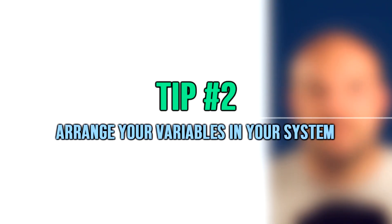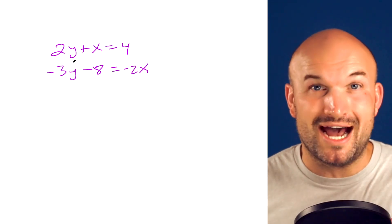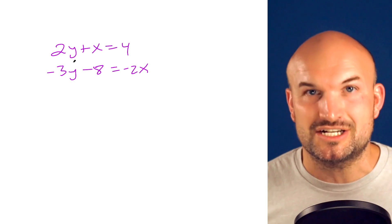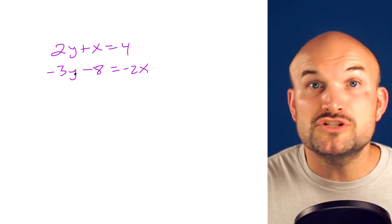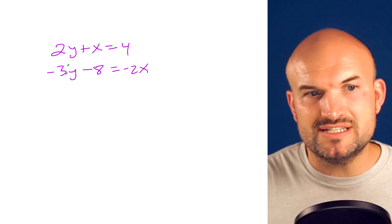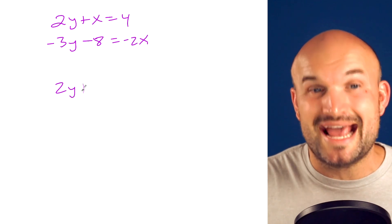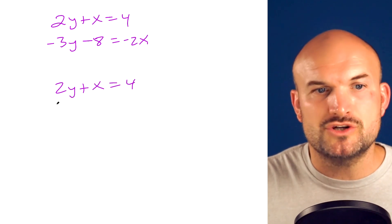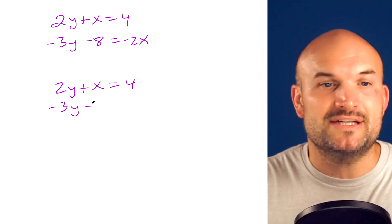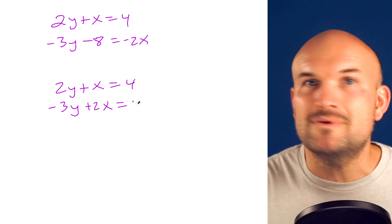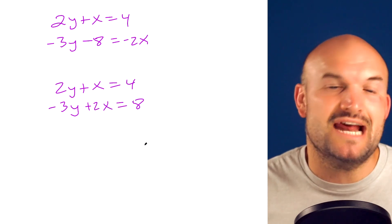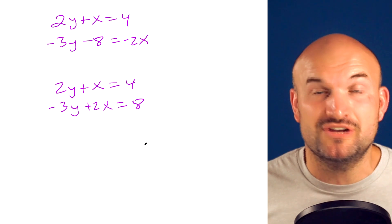Tip number two is to arrange your variables in your system. And what I mean by that is your Y should be over your Ys, your X should be over your Xs, and your constants should be over your constants. So looking at my system that I have here, you can see my Ys are aligned. I need to align my Xs as well as leave my constants. So I'll add an 8 to the other side and I'll add my 2X over to this side. And now it's going to look just like this. Now you can see that everything is aligned and that's going to make elimination very easy for us.